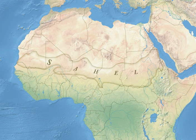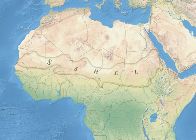Traditionally, most of the people in the Sahel have been semi-nomads, farming and raising livestock in a system of transhumance, which is probably the most sustainable way of utilizing the Sahel. The difference between the dry north with higher levels of soil nutrients and the wetter south with more vegetation is utilized by having the herds graze on high-quality feed in the north during the wet season, and trek several hundred kilometers to the south to graze on more abundant but less nutritious feed during the dry period. In the western Sahel, polygamy and child marriage are common, and female genital mutilation is also practiced across the Sahel.